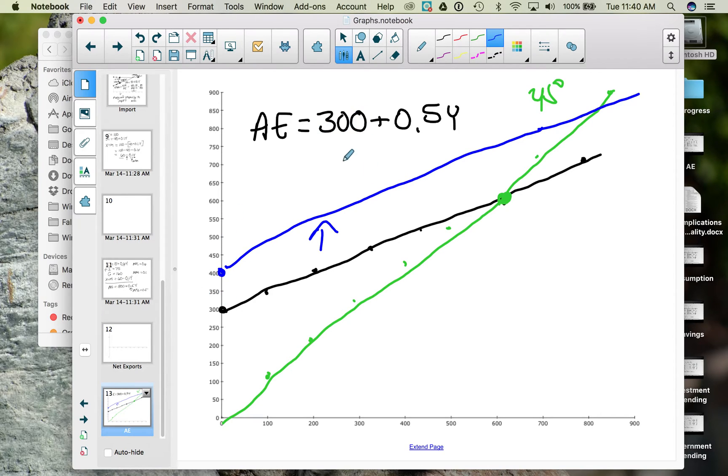So autonomous spending has increased. Notice that the new equilibrium is at a higher level of income. So an increase in autonomous aggregate expenditures causes national income to increase as well.